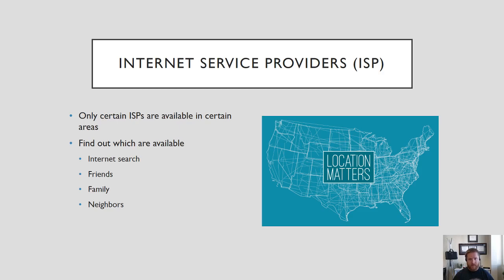Your internet service provider, or ISP, is only available in certain areas. So just because you see a commercial for something may or may not mean that you actually have that particular service or company in your area. You're going to want to make sure you research to figure out which ones are actually available. Remember, your cell phone uses a different network than your home network, so you could do a Google search or any type of internet search to figure out what ISPs are available in your area.